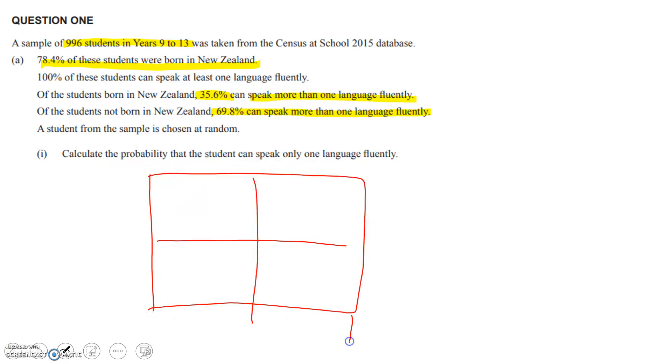So here's my table. I've got 996 here. This is going to be born in New Zealand, not born in New Zealand. Speaks more than one language, speaks exactly one language. Putting the numbers in now, what do we get?